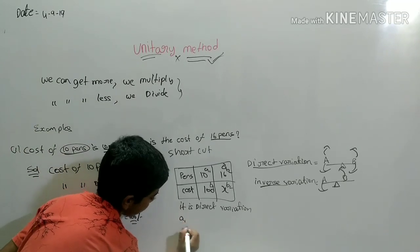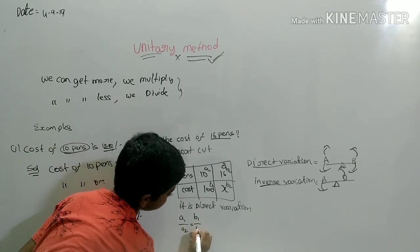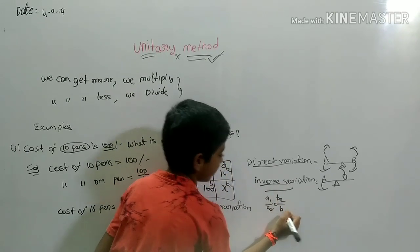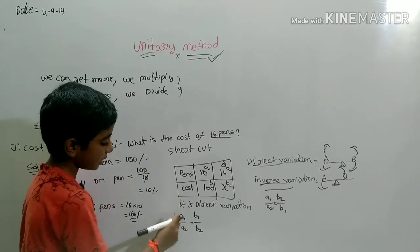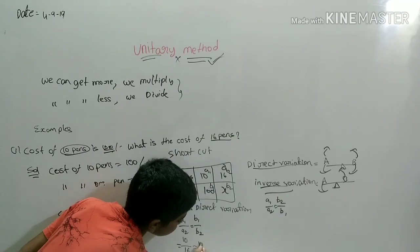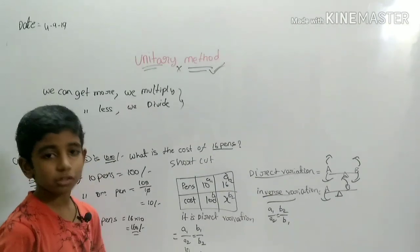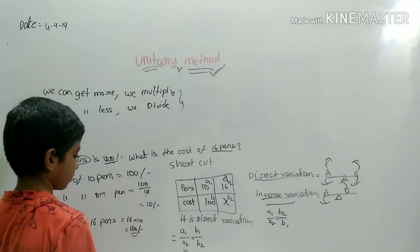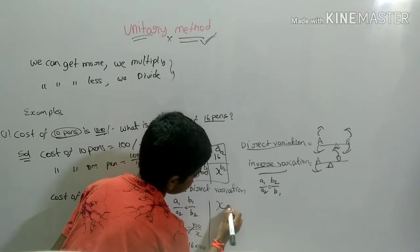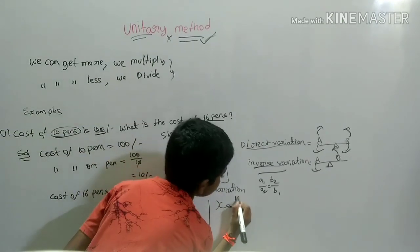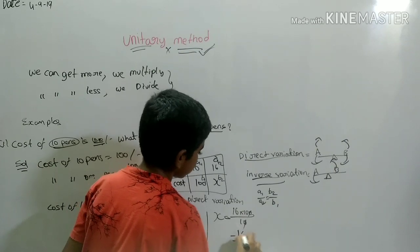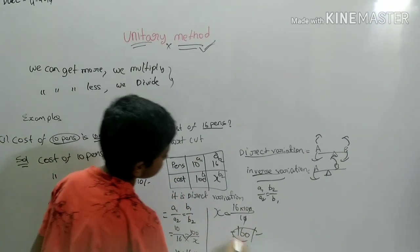Direct variation formula: A1 by A2 is equal to B1 by B2. So 10 by 16 is equal to 100 by X. Cross multiplying: 10X is equal to 16 into 100. Therefore X is equal to 16 into 100 divided by 10. Cancel the zeros: X equals 160 rupees. This is the shortcut answer — 160 rupees.